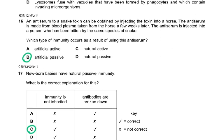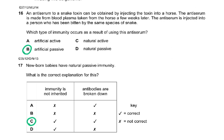Question 16: an anti-serum to a snake toxin can be obtained by injecting the toxin into a horse. The anti-serum is made from blood plasma taken from the horse a few weeks later, then injected into a person bitten by the same species of snake. What type of immunity occurs? If we are injecting antibodies, it has to be passive immunity, and because we are doing it artificially, it has to be artificial passive. Natural passive is mother to fetus or mother to infant in breast milk.